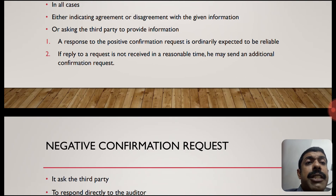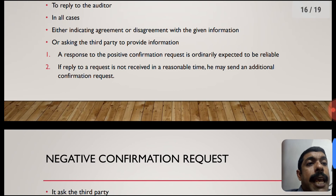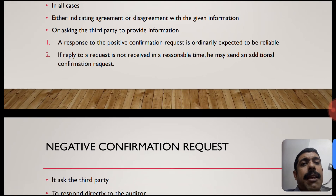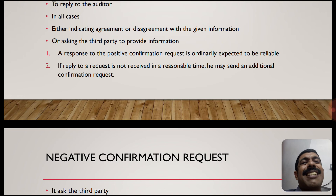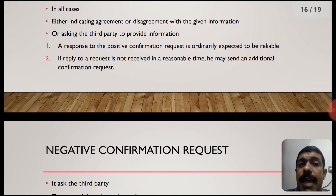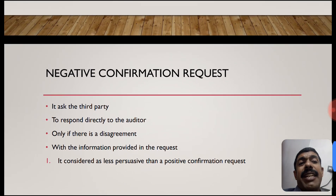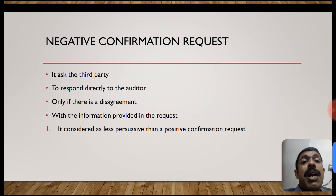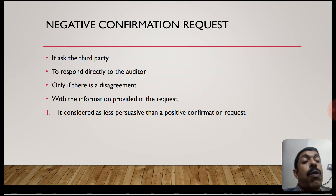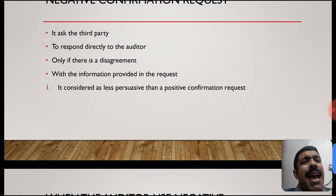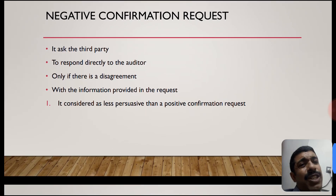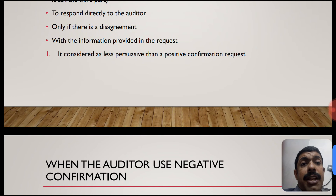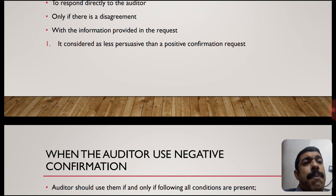If a reply to the positive confirmation request is not received within a reasonable time, the auditor may send an additional confirmation request - the auditor may follow up multiple times. A negative confirmation request asks a third party to respond directly to the auditor - not to the client - only if there is a disagreement with the balance provided. If there is no disagreement, the third party does not need to respond. Negative confirmation is considered less persuasive than a positive confirmation request.